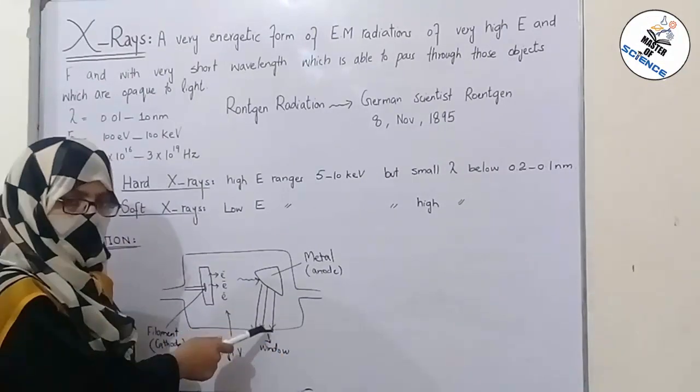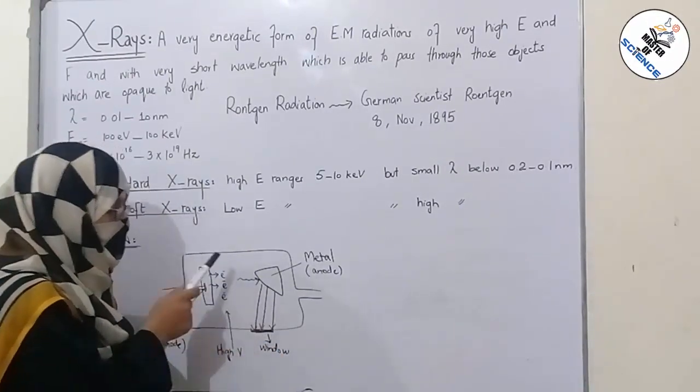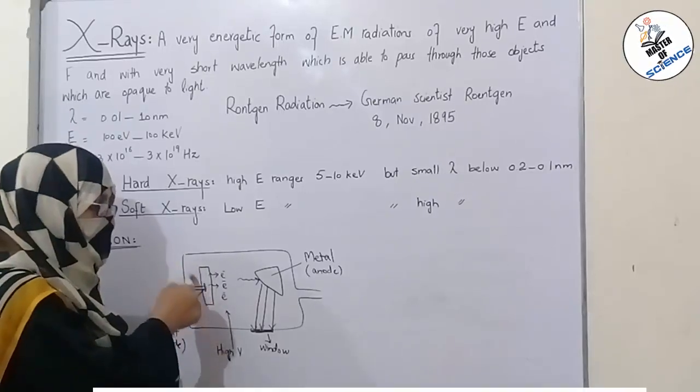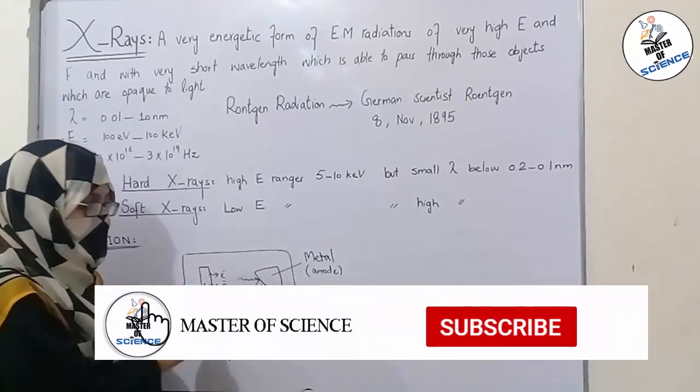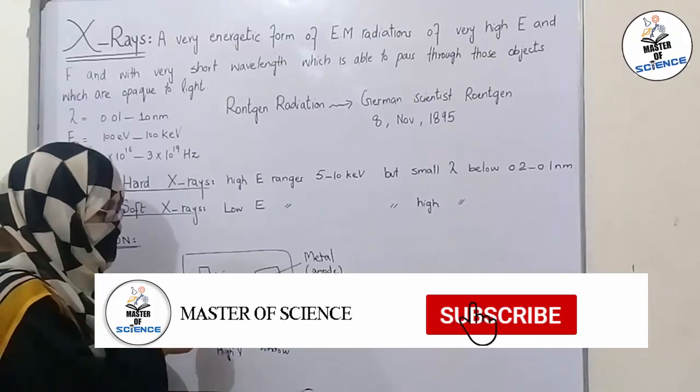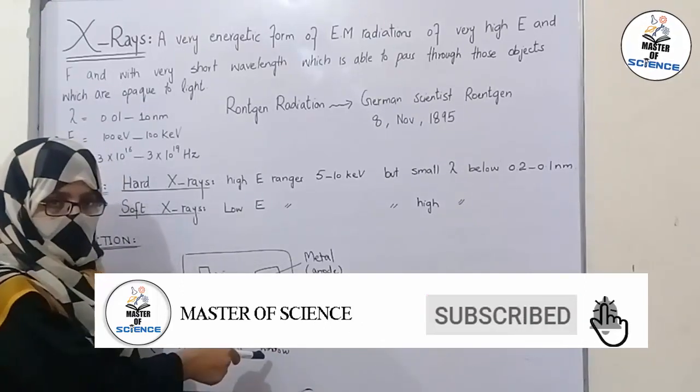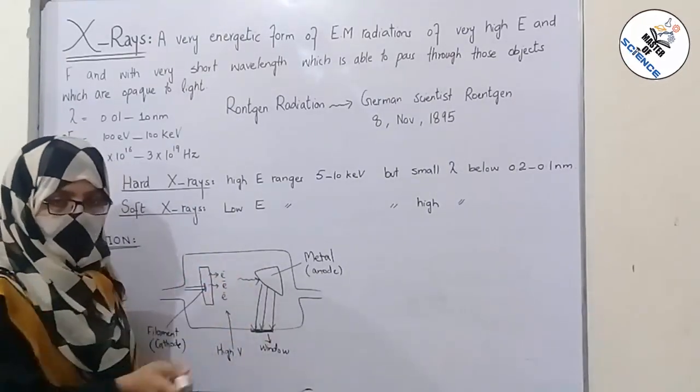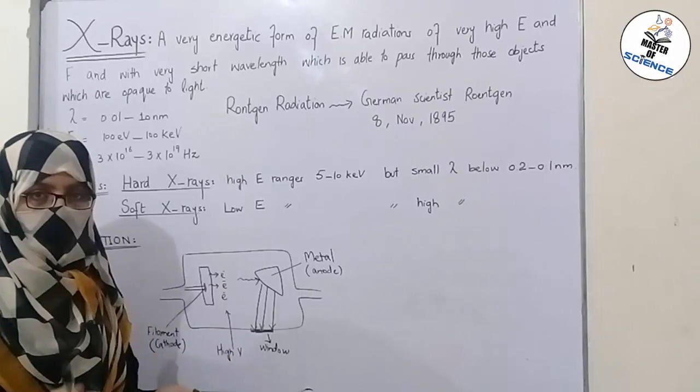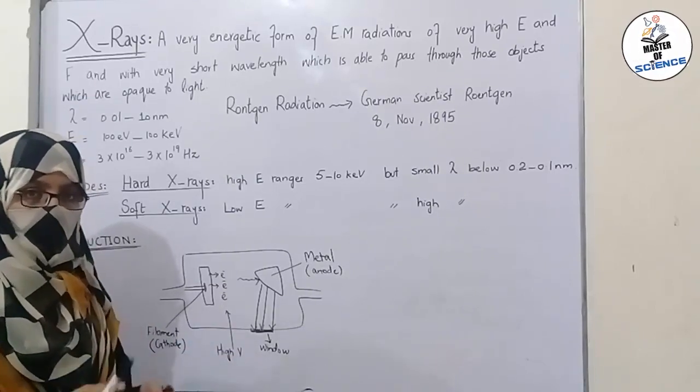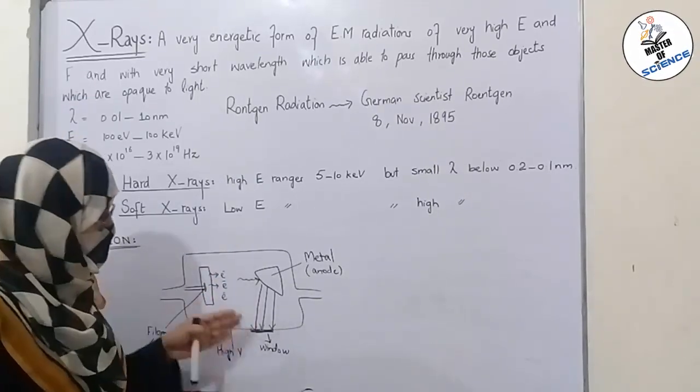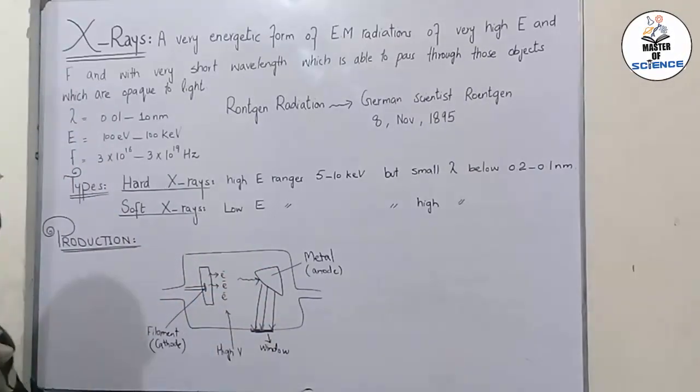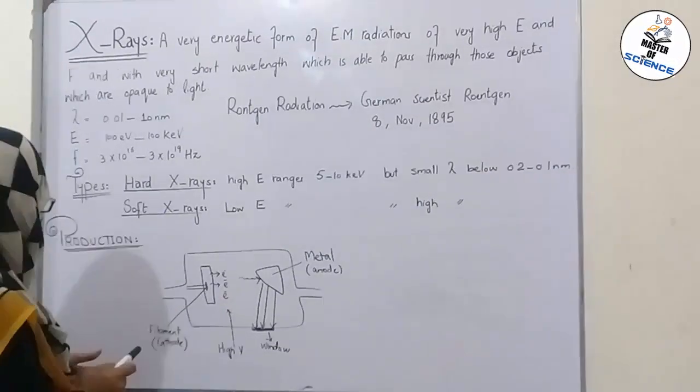Now the number of X-rays which are produced depends on the number of electrons released by the hot cathode and their time of release. Both of these determine the number of X-rays which are going to produce. Metal target in most X-ray machines is actually rotator, means it rotates and continually allows X-rays to exit out from the window.